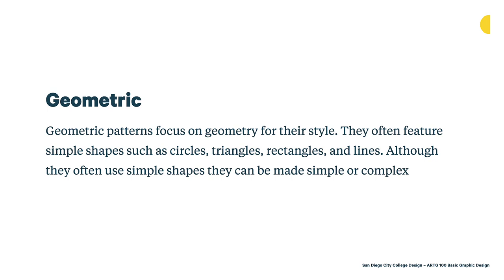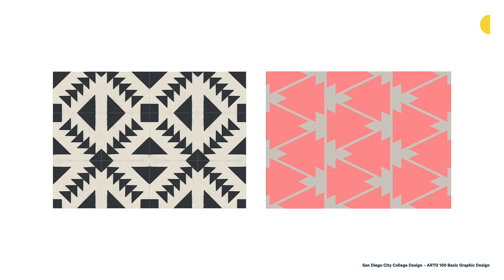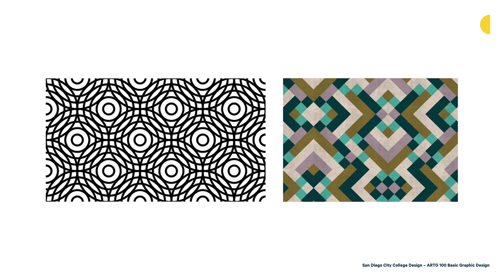Patterns generally fall into different categories. One of them is geometric. Geometric patterns focus on geometry for their style and often feature simple shapes such as circles, triangles, rectangles, and lines. Although they use simple shapes, they can be made very complex or very simple. Here are some using just triangles and squares — the one on the right has triangles overlaid in an interesting way, creating a nice use of positive and negative space. Some more complex examples include overlapping circles on the left and interesting squares in different colors on the right.